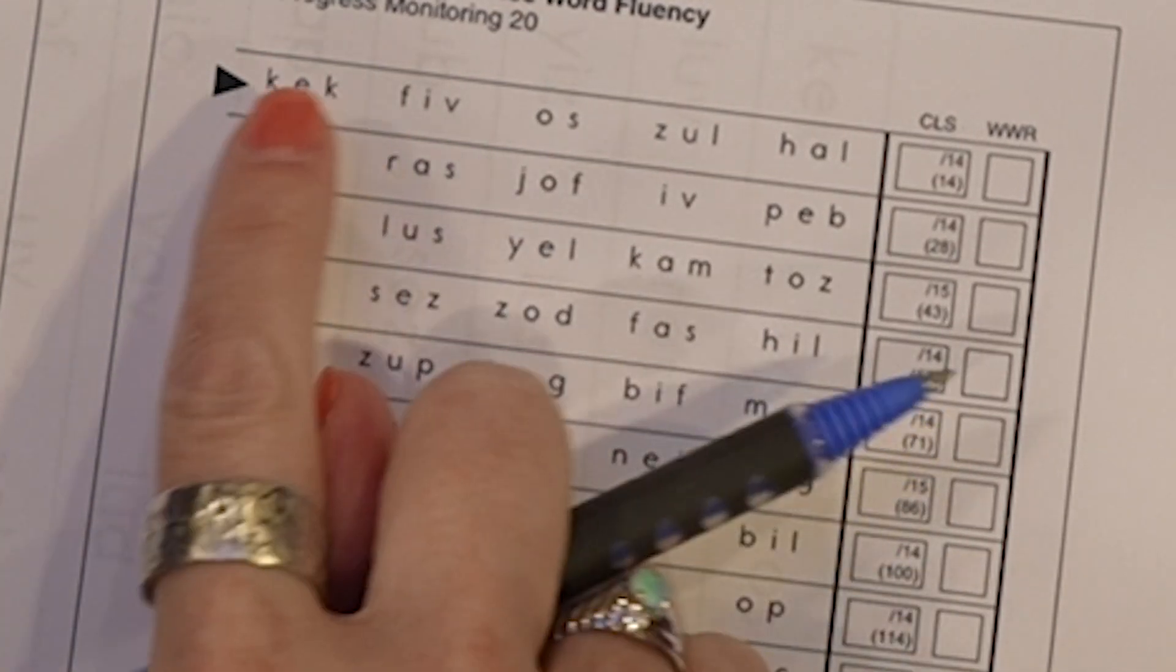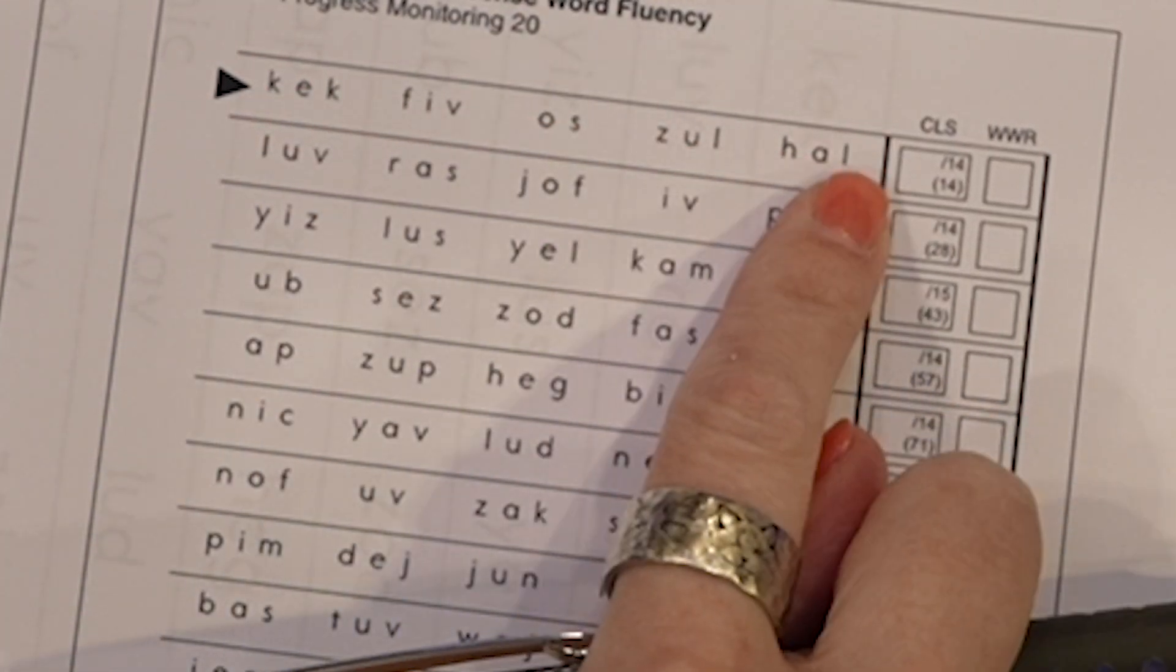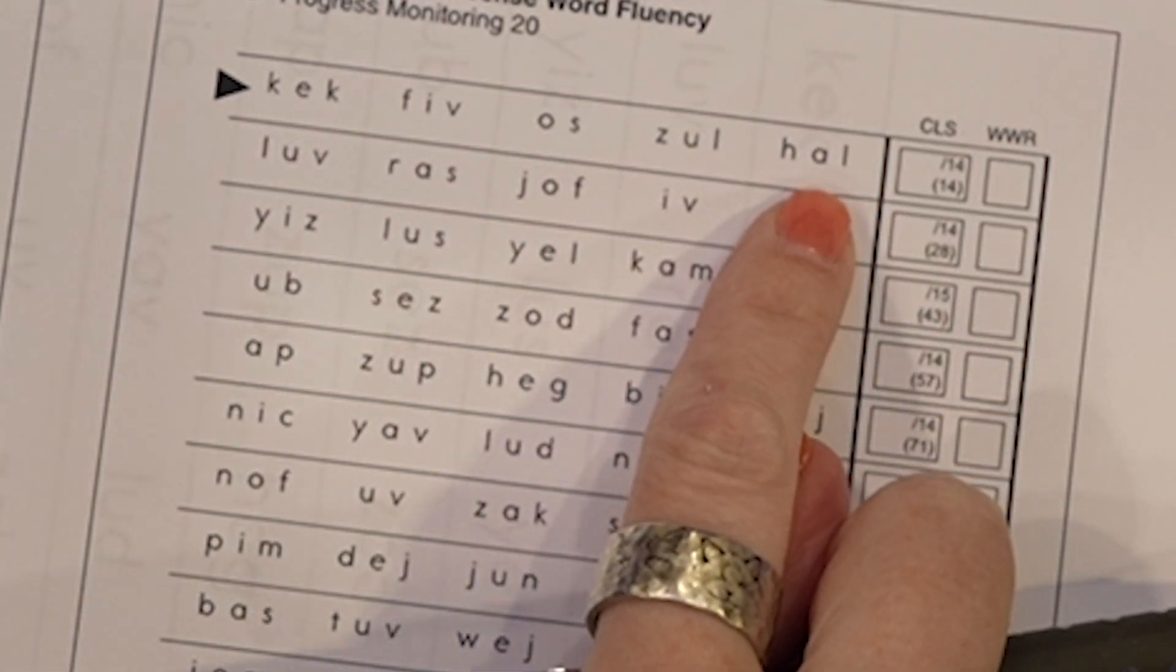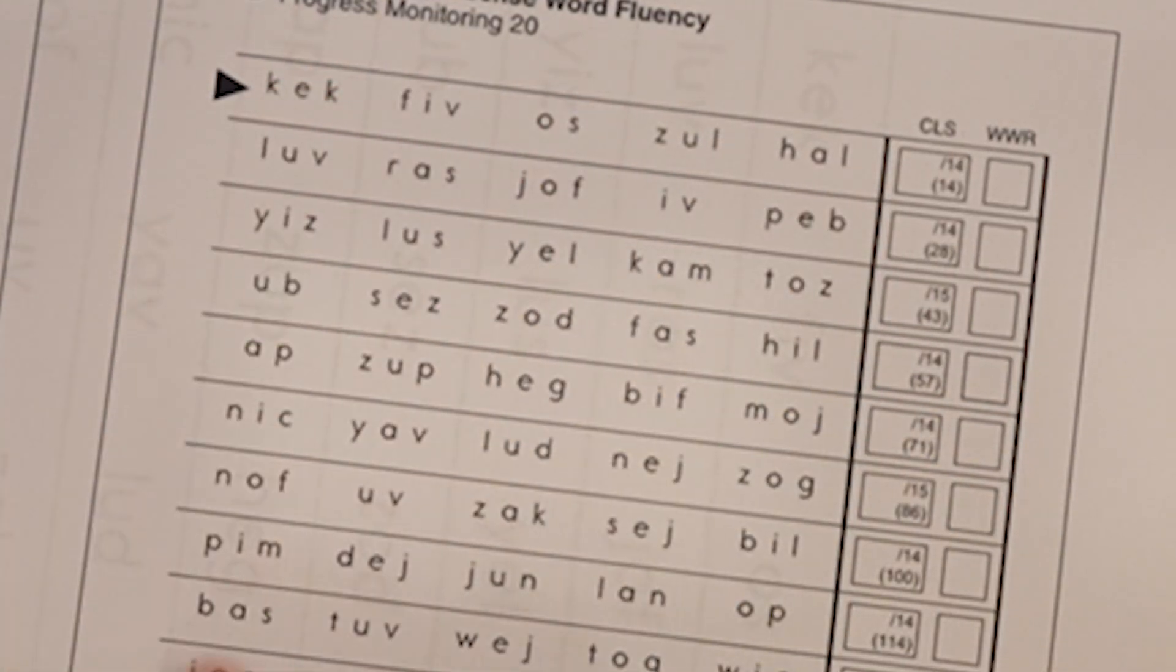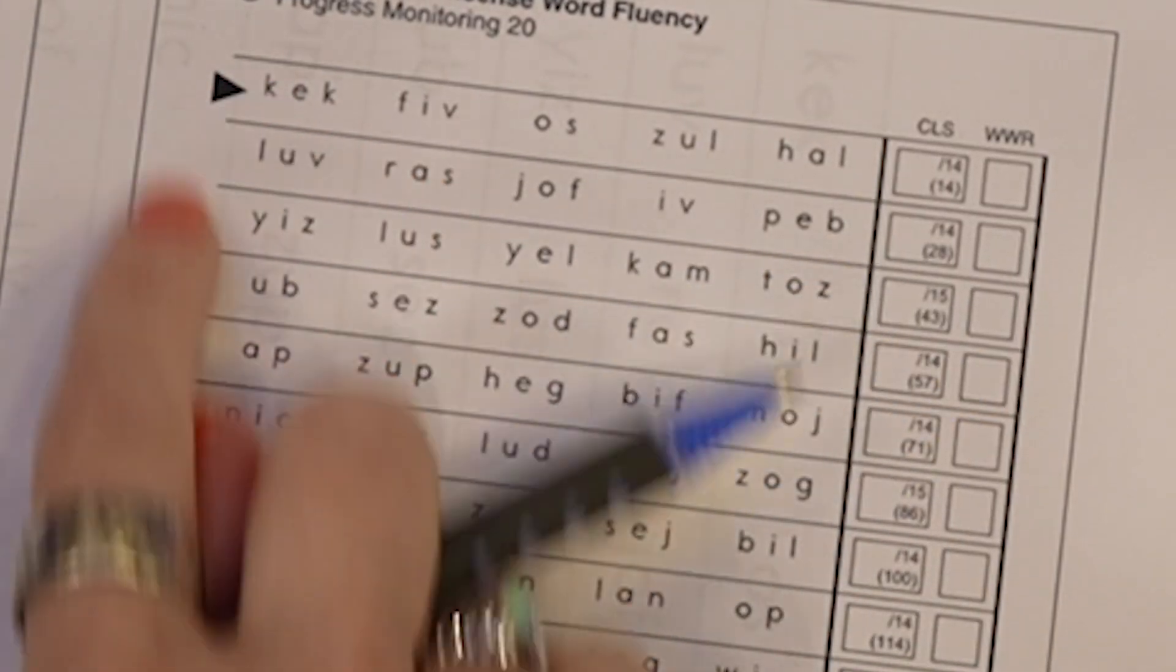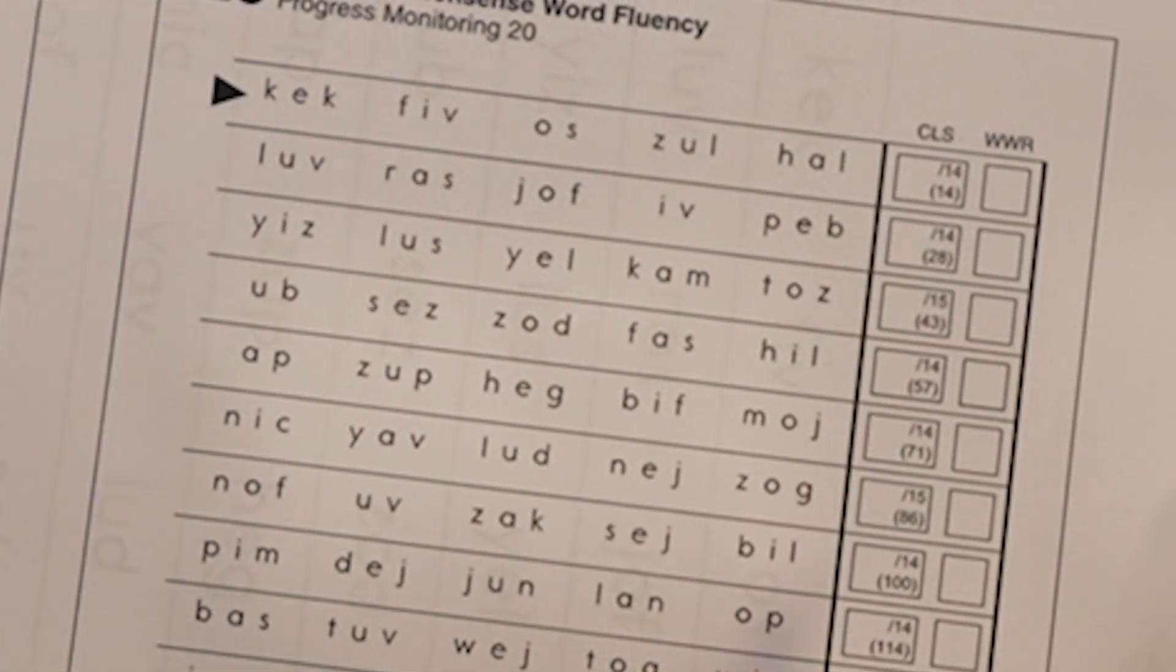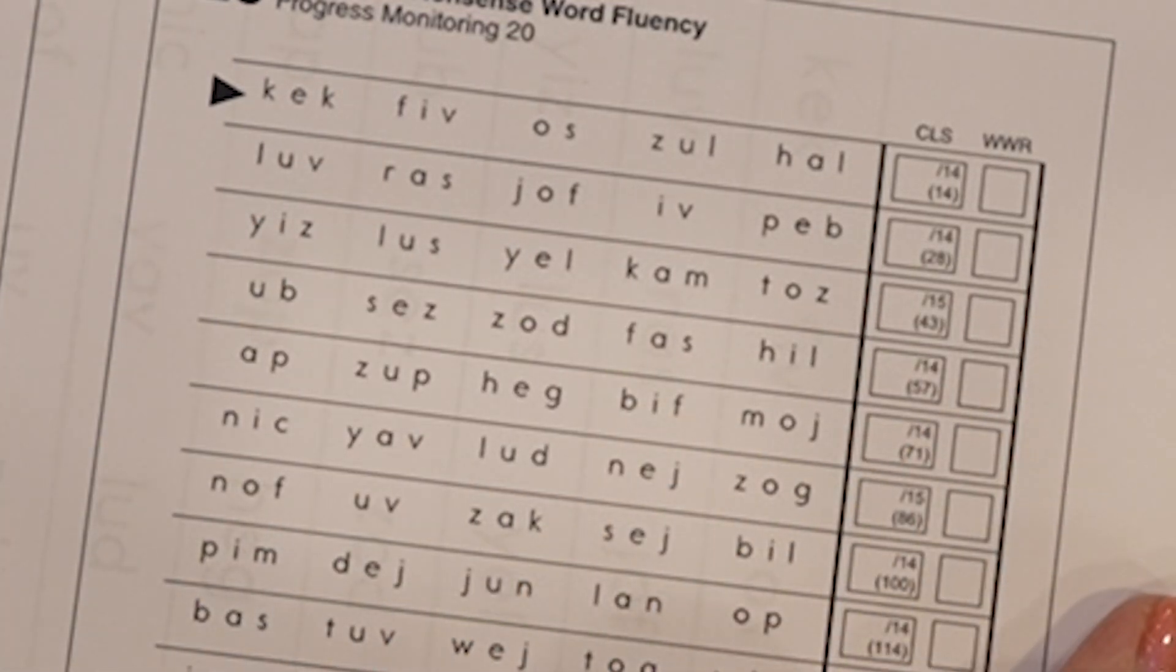Now if the student were to start going down you would say go this way. Because we do want them to read across. Believe it or not the timing is different whether you are reading across or down. And because this is nationally normed we need to make sure everybody is reading it the same direction.